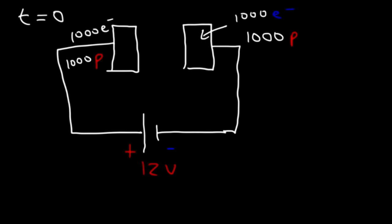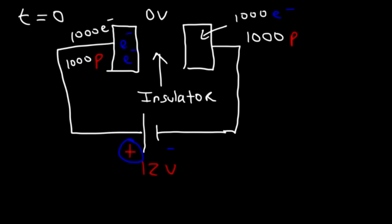Once you attach the battery to the capacitor, which has a voltage of zero, because there's a difference in electric potential, current will flow. Current doesn't flow in between the two metal plates because there's an insulator there, and insulators do not conduct electricity. So the electrons will flow from one side to the other side. Because this side has a positive charge, the electrons on the left will flow in that direction. The battery, using its voltage — which you can think of as an electromotive force — basically pumps electrons from one side of the capacitor to the other side, and that's how it charges it.